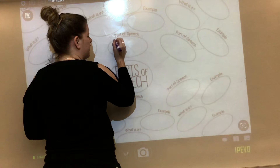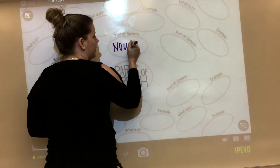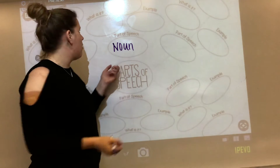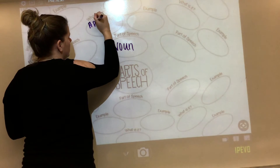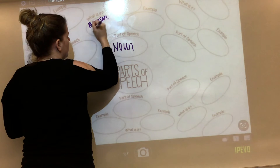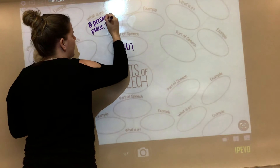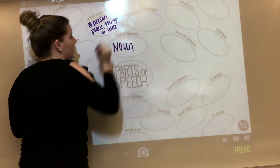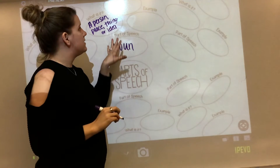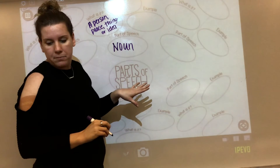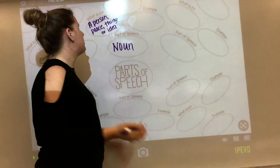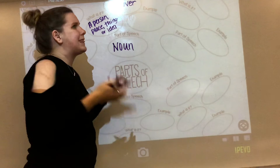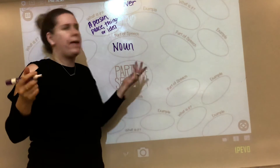The first thing we're going to talk about is the noun, because it's kind of like the first one you ever really talk about when you learn parts of speech. A noun is a person, place, thing, or idea. So we have some examples — anything can be an example. We can say a flower, which is a thing, or a place like the zoo.